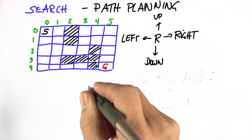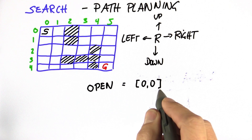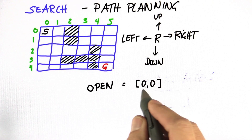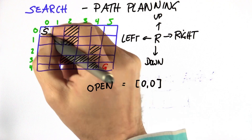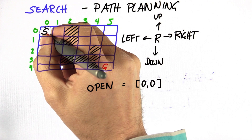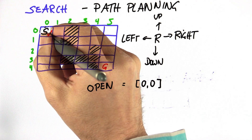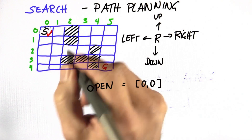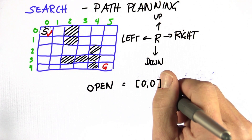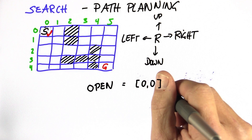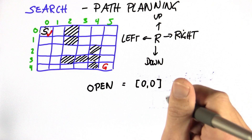Let's call this list open. So in the beginning, we only have one state on this list — it's (0, 0), my initial state. And just to make sure I never pick this state again, I don't want any cycles in my path, so let me check mark this state with a little red check. I can now test whether this state is my final goal state. Obviously it's not — I'm not done with planning yet.